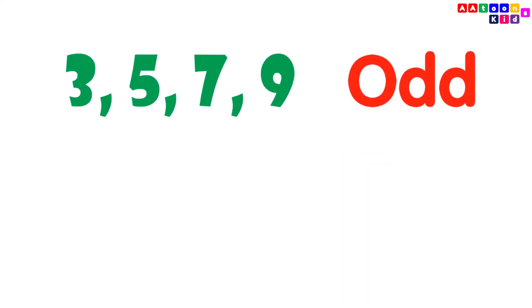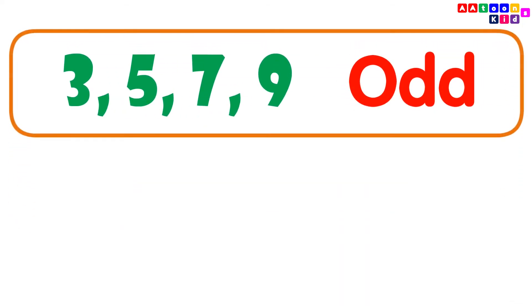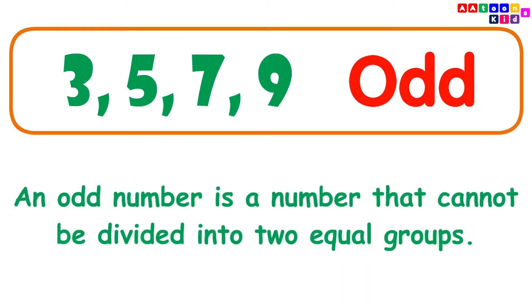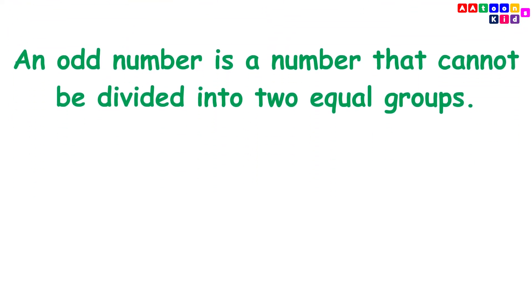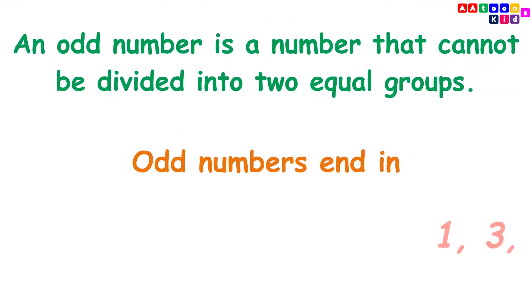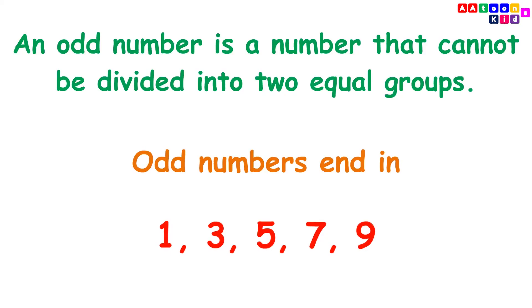Odd numbers. An odd number is a number that cannot be divided into two equal groups. Odd numbers end in 1, 3, 5, 7, or 9.